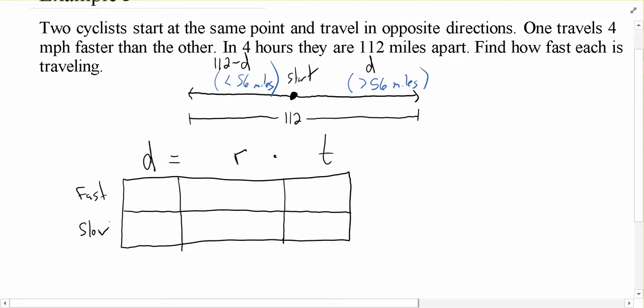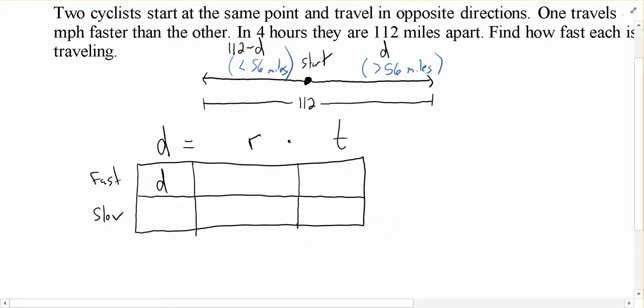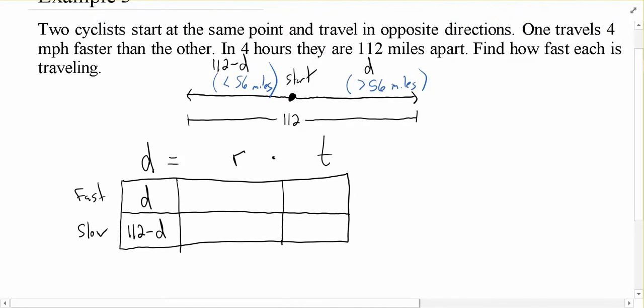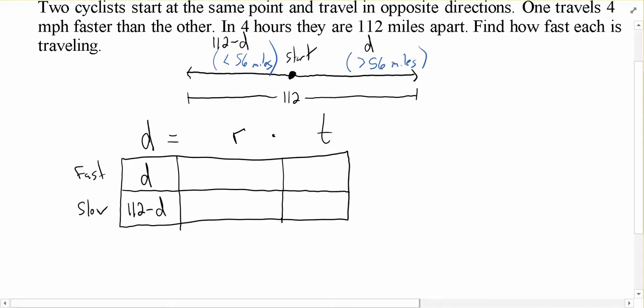So in this case, we know the fast guy, according to our picture up there, his distance is D. The slow guy, according to our picture, is 112 minus D. Now, the rate that they're traveling at, don't know. Don't know the fast guy. Don't know the slow guy. Do know how they're related. The fast one is going 4 miles per hour faster than the other. So I need to call one of these guys X. It doesn't matter which one. You can call it R if you want.